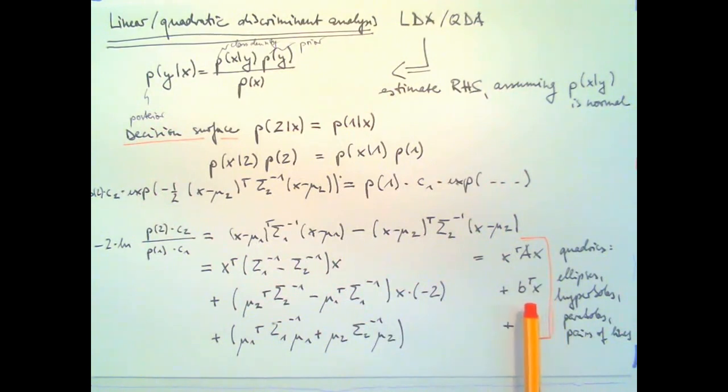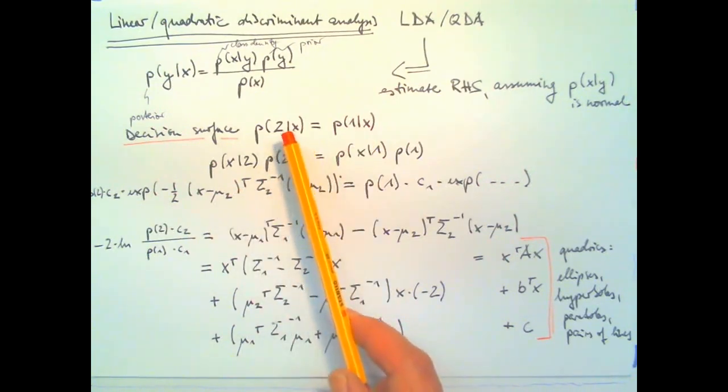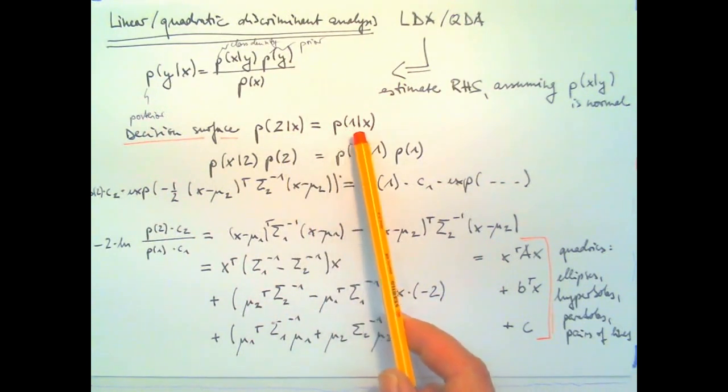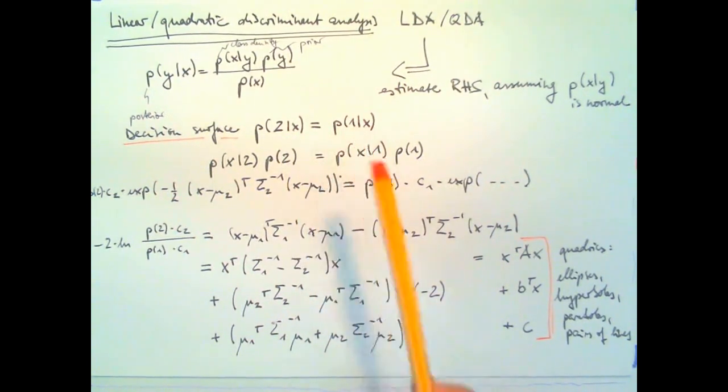So, the set of points where the two posterior probabilities are exactly the same size and if I move on one side of the decision surface, I should predict this class and as soon as I move to the other side of the decision surface, I should predict that class.